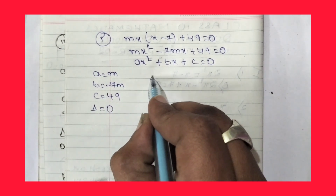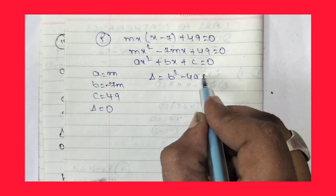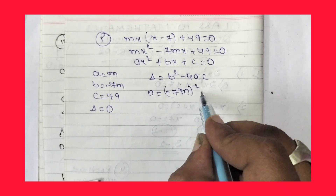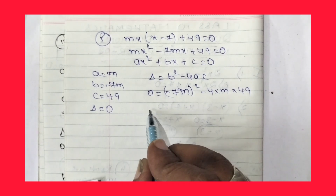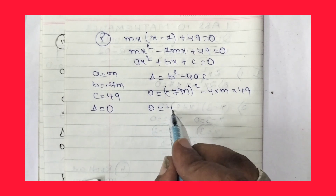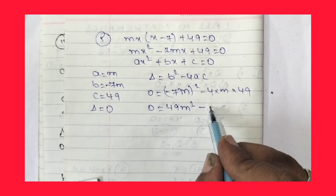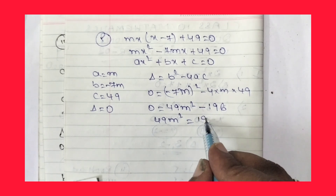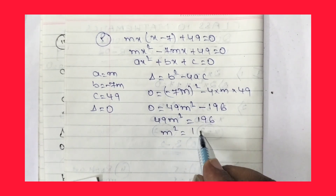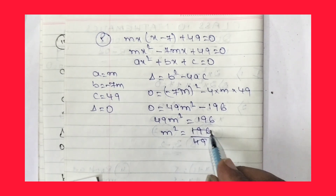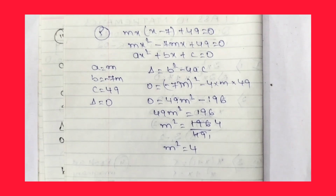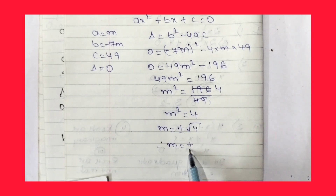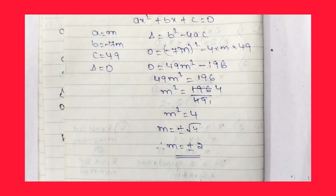Since two roots are equal, delta = 0. So delta = b² - 4ac = 0. That gives (-7m)² - 4(m)(49) = 0, so 49m² - 196m = 0. Then 49m² = 196, so m² = 196/49 = 4. Therefore m = ±√4 = ±2. Like this we find the value of m.